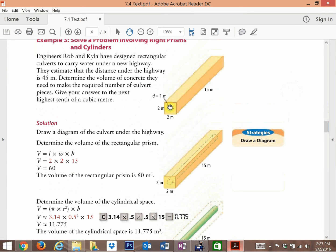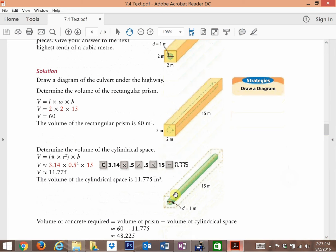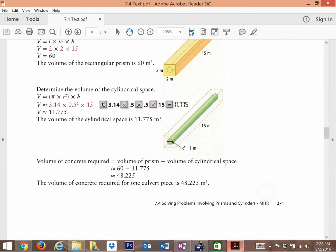The idea here is that you have to remove the volume of the cylinder from the rectangular prism. So that would be subtracting the cylinder volume from the rectangular prism volume. And that's how that's done.